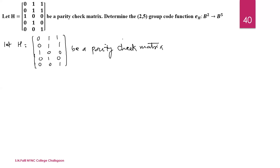The encoding function is defined as E subscript H from B raised to 2 to B raised to 5. The domain is B raised to 2, which contains 2 raised to 2 elements — that is, there are 4 elements.